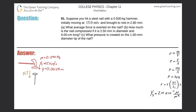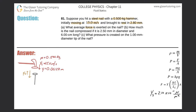Number 81. Suppose you hit a steel nail with a 0.5 kilogram hammer initially moving at 15 meters per second and brought to rest in 2.8 millimeters. Letter A: what average force is exerted on the nail? So here we essentially have a hammer hitting a nail, and we want to find the force that's basically imparted to the nail.